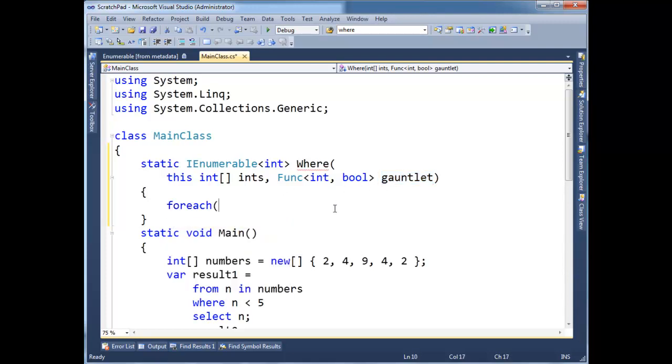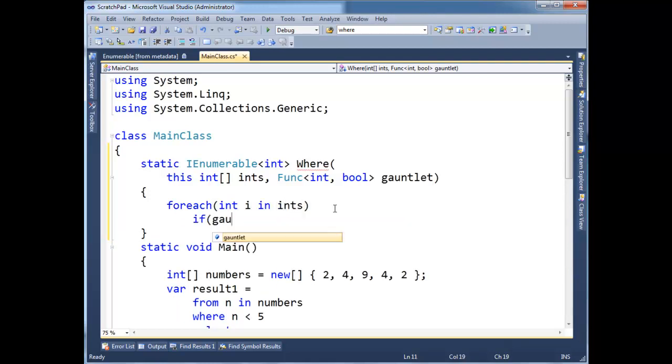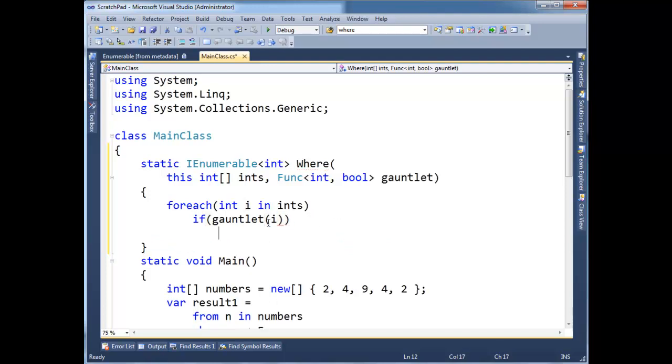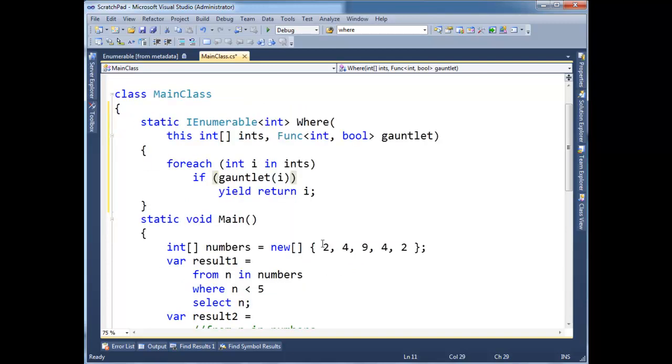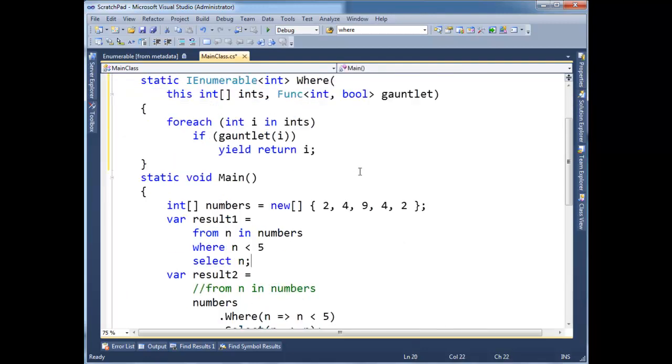Alright, I like gauntlet more. Let's just, for each, int i in ints, if gauntlet, run each int one by one through the gauntlet, if it passes the gauntlet, meaning the gauntlet returns true, then yield return i. And if you don't know what yield return does, go look at the yield return video. So, basically, I'm going through all the ints that are passed through here, and if it passes the gauntlet, then return it.